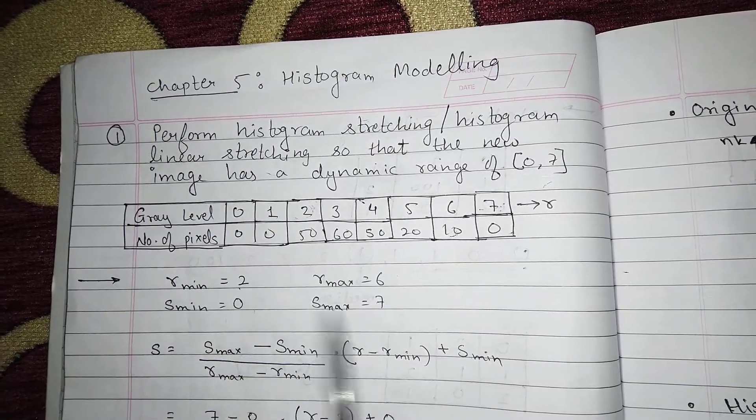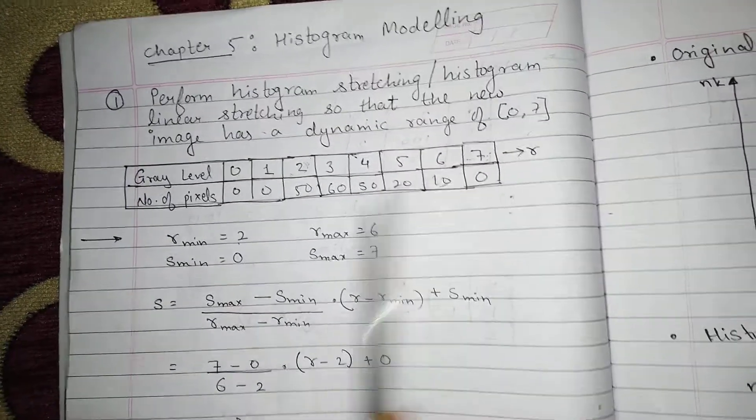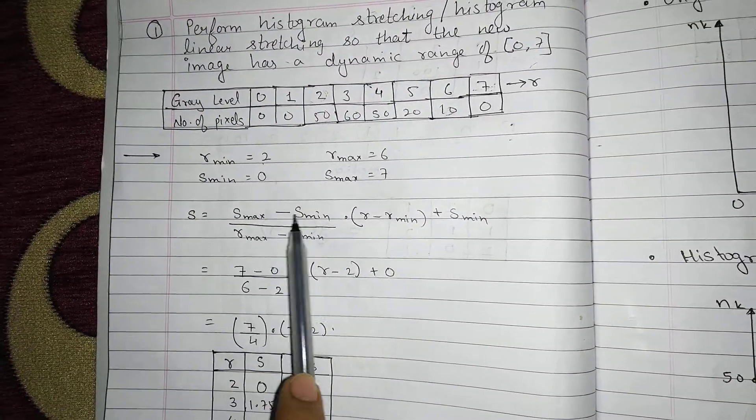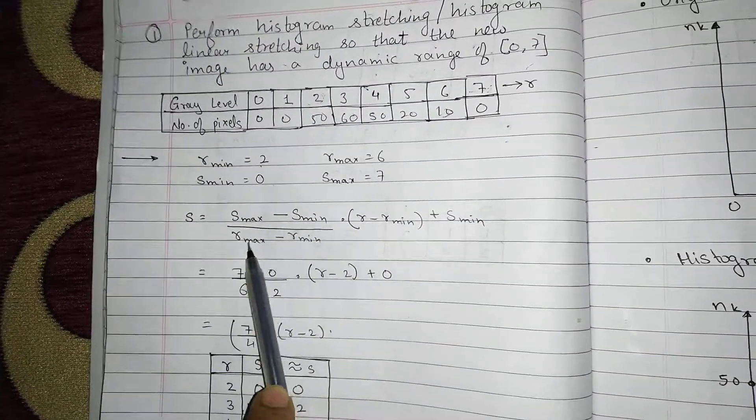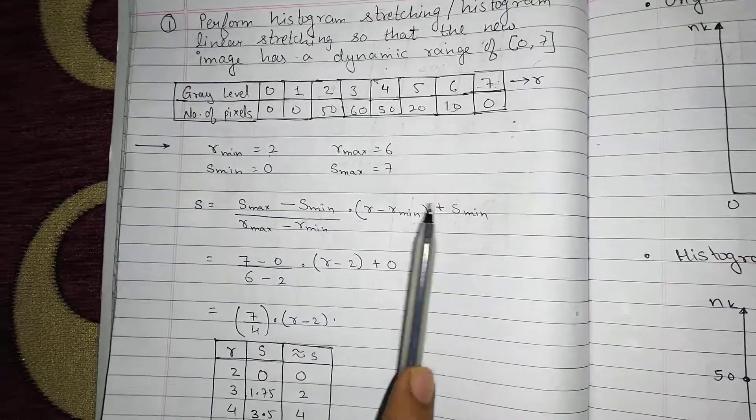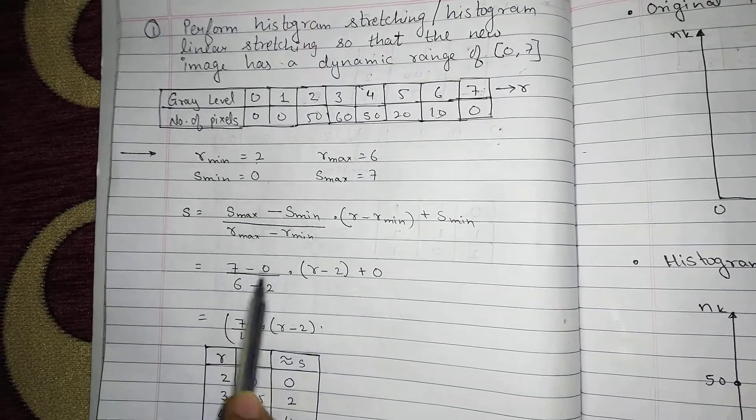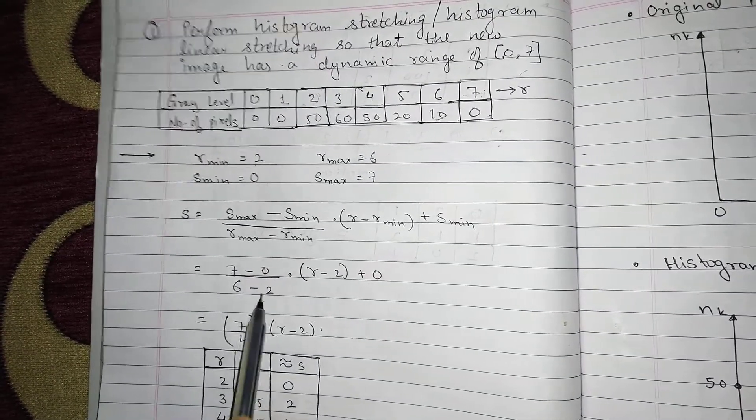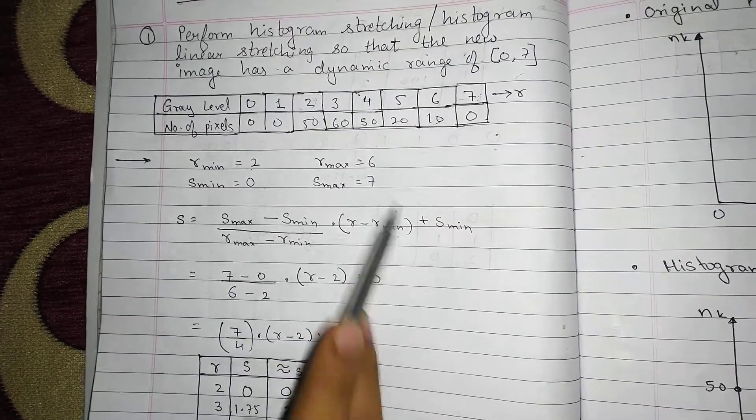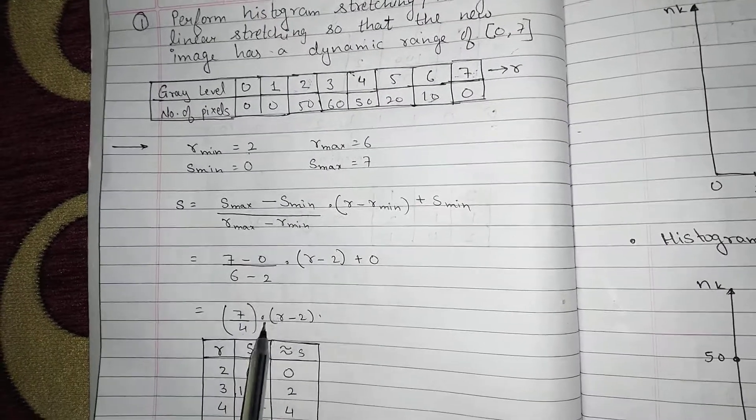Now I have to find S min and S max that is nothing but my 0 to 7. So S min is 0, S max is 7. Now the formula for S is S max minus S min divided by R max minus R min multiplied by R minus R min plus S min. Substituting the values we get 7 minus 0 upon 6 minus 2 multiplied by R minus 2 plus 0.